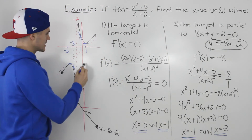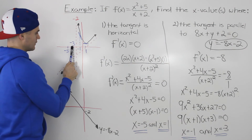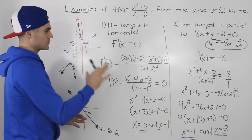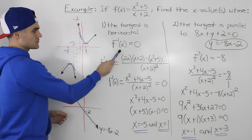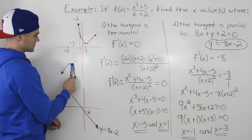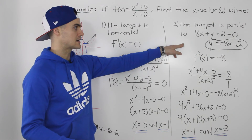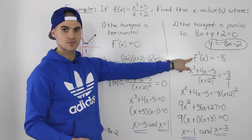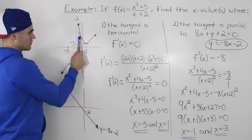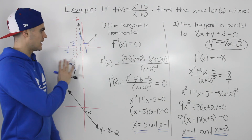On the graph, at an x value of negative 1 the tangent will have a slope of negative 8, and at an x value of negative 3 that tangent also has a slope of negative 8. To recap: for part 1 we found horizontal tangents by solving the derivative equal to 0 using the quotient rule, getting x equals negative 5 and x equals 1. For part 2 we solved the derivative equal to negative 8, finding x equals negative 3 and x equals negative 1, where both tangents have slope negative 8.